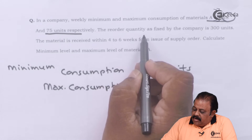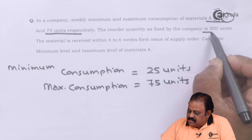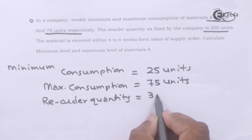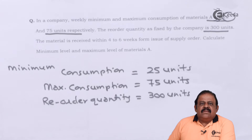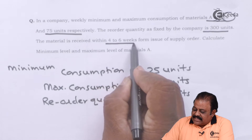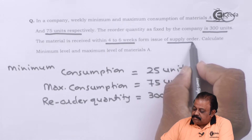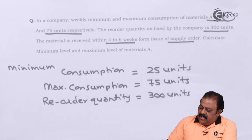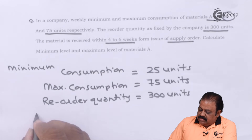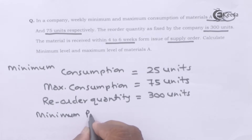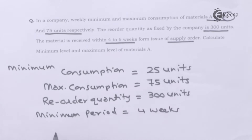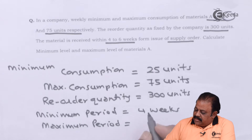The reorder quantity as fixed by the company is 300 units. The material is received within four to six weeks from the issue of a supply order. So the minimum period of receiving material is four weeks and the maximum period is six weeks.